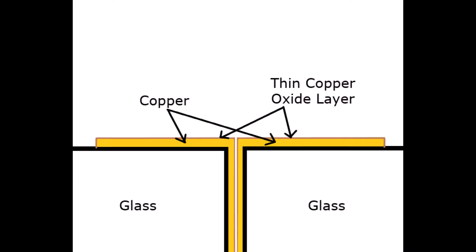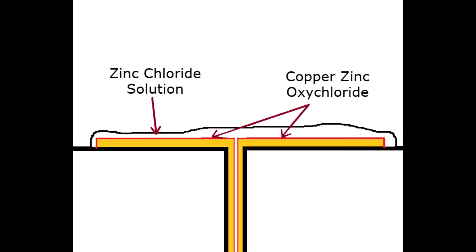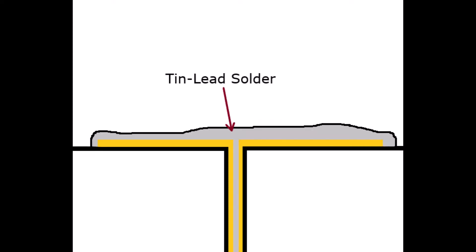How does this work? A thin layer of copper oxide inhibits the solder from adhering to it. The zinc chloride solution destroys the copper oxide layer by forming copper zinc oxychloride, which dissolves into solution. Molten tin lead solder will then adhere to the surface of the copper.